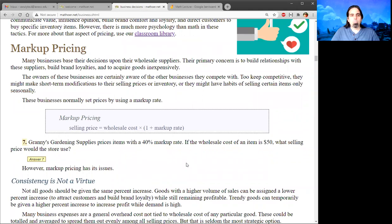The first one we'll call markup pricing. For most people, this seems to make the most sense because people tend to do a lot more shopping than running a store. Many businesses will base their decisions on the wholesale suppliers, and their primary concern is to build relationships with these suppliers and acquire goods inexpensively. So for these businesses, what makes sense is to set prices with a markup rate. They'll say, I know the wholesale cost, my supplier can get me this thing, and then I'm going to multiply it using that one plus trick. And then we'll get the selling price.